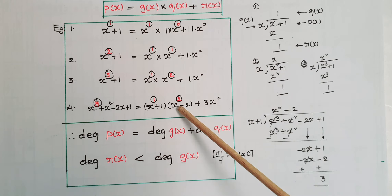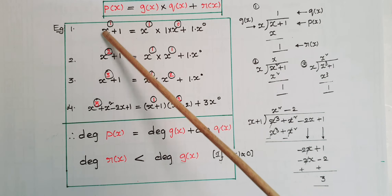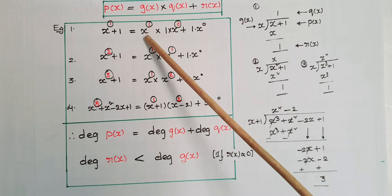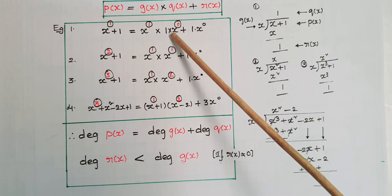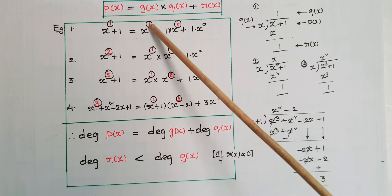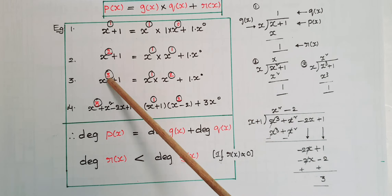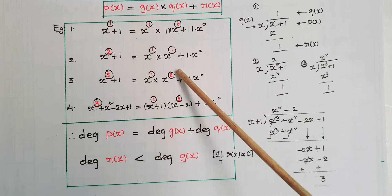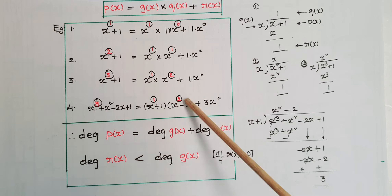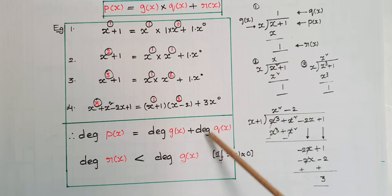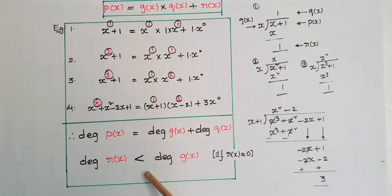If you observe all these examples, the degree of p(x) equals the degree of g(x) plus the degree of q(x). For instance: 1 = 1 + 0; 2 = 1 + 1; 3 = 1 + 2; 3 = 1 + 2. So degree of p(x) = degree of g(x) + degree of q(x), and degree of r(x) is always less than degree of g(x).